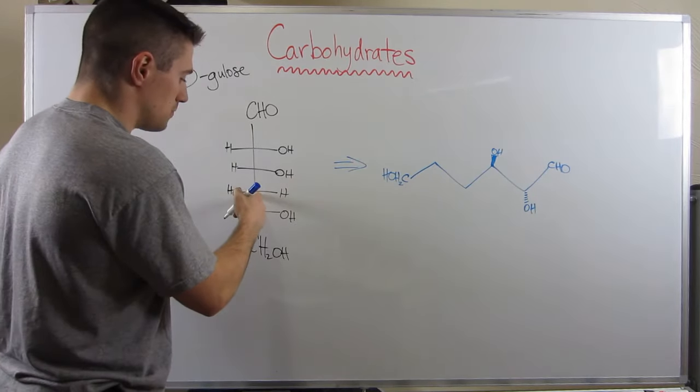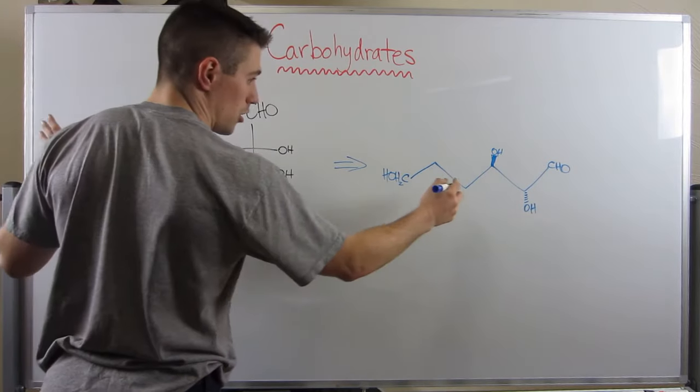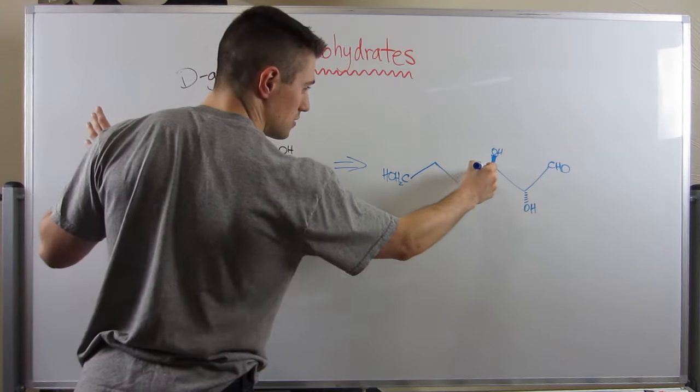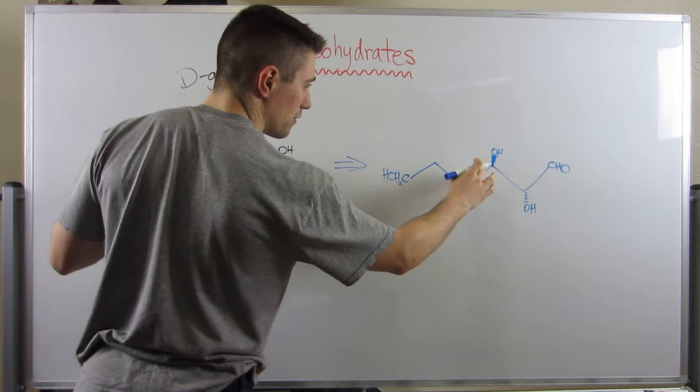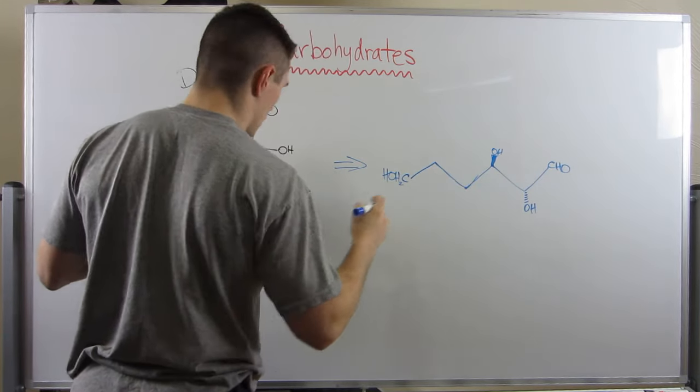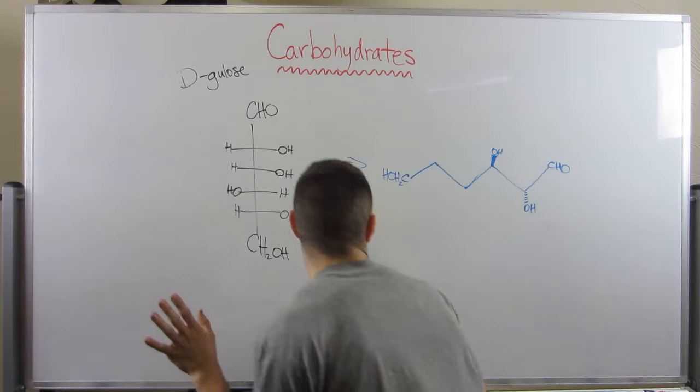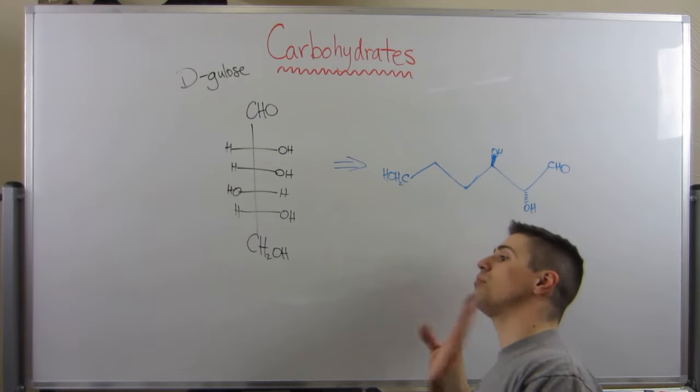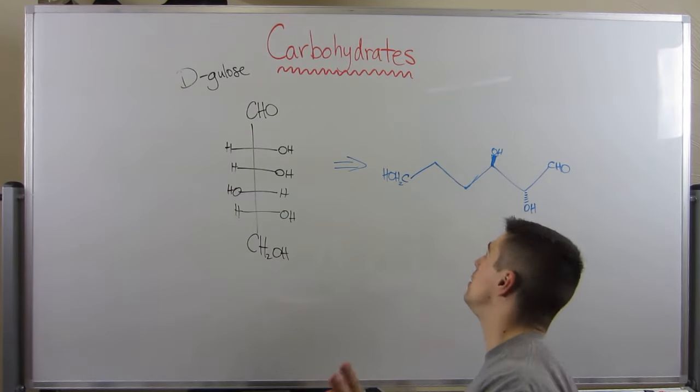Looking at this carbon, OH is on my left-hand side. My carbon's here. I need these two to be facing away from me. So OH is on my left. I'm going to get down here. My left is coming out of the board towards you, the camera. That's a wedge.